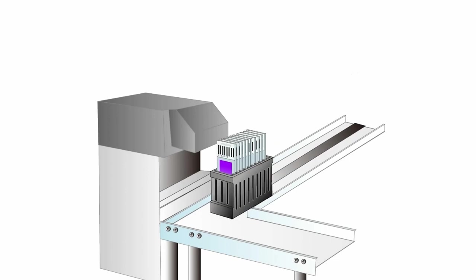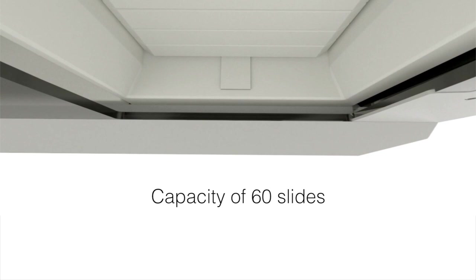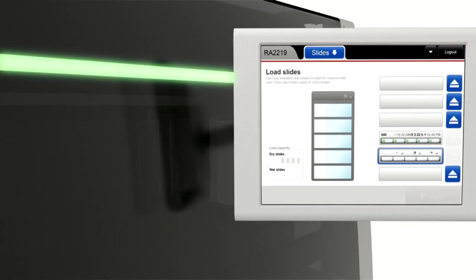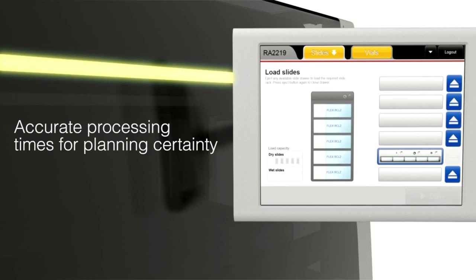Components of auto staining machines: The first robotic IHC workstation, introduced in the 1980s by Bregatti, achieved the complex steps of reagent application and washing using a capillary action technique between paired glass slides.